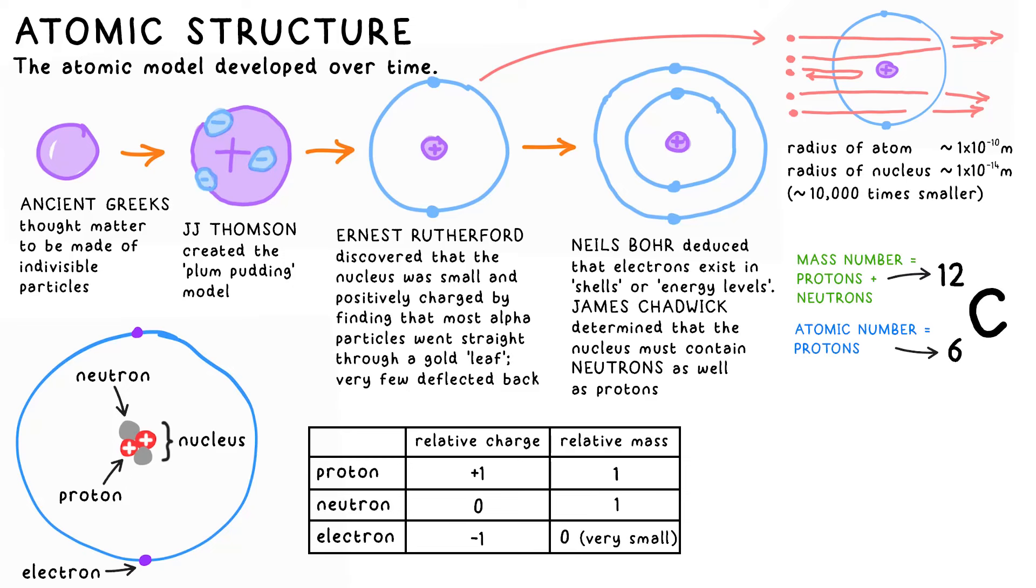Different types of atoms are represented by symbols, which we also find in the periodic table. The bottom number is the atomic number. That's the number of protons in the nucleus. This is what determines what element you actually have. The top number is the mass number. This tells you how many protons and neutrons are in the nucleus. So that must mean that this carbon atom has six neutrons on top of its six protons to make 12.